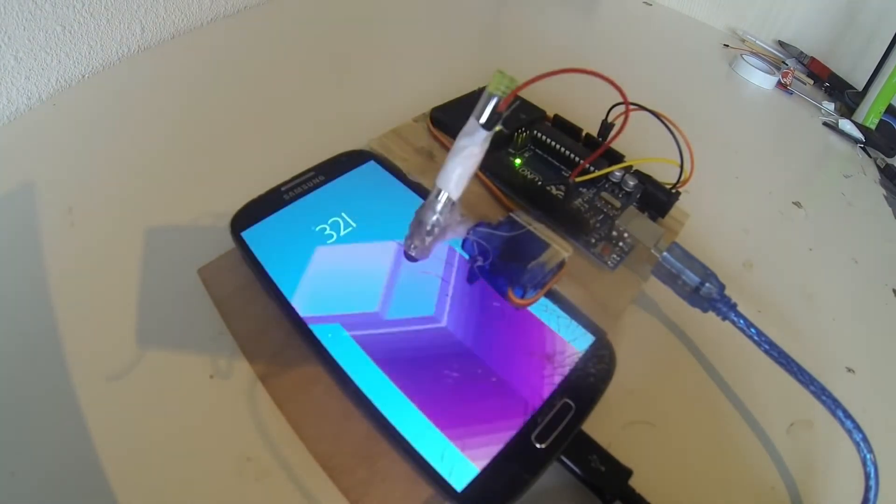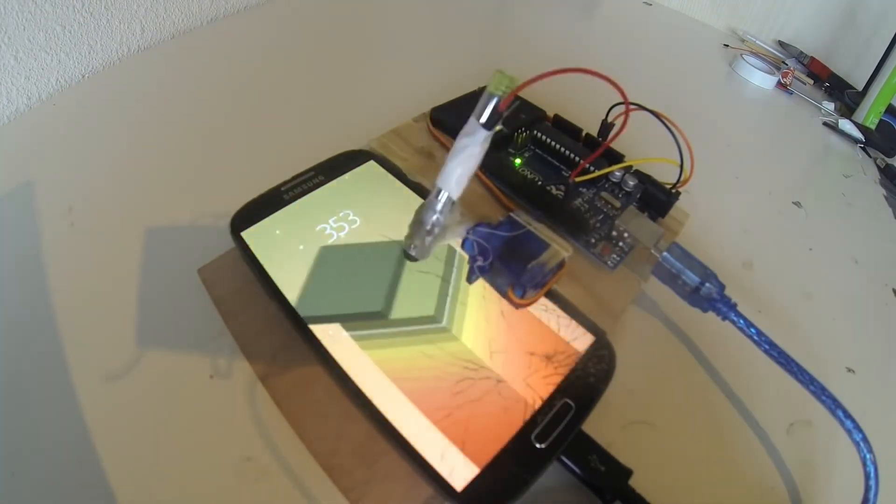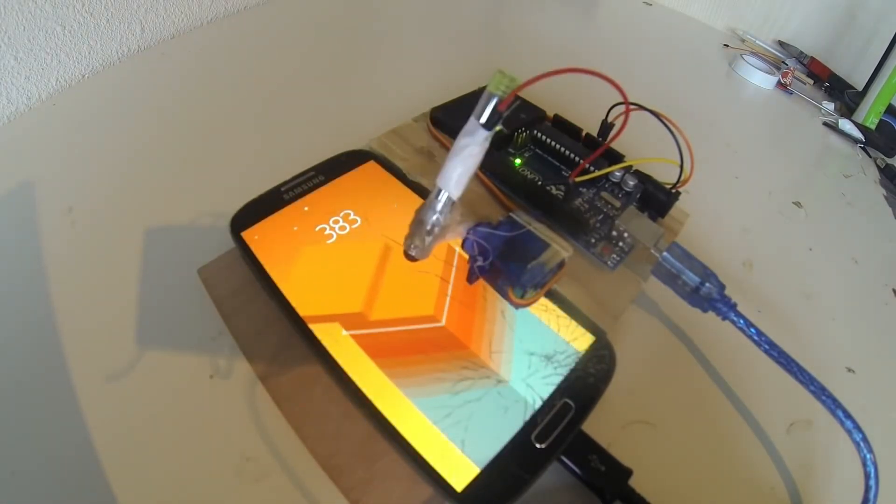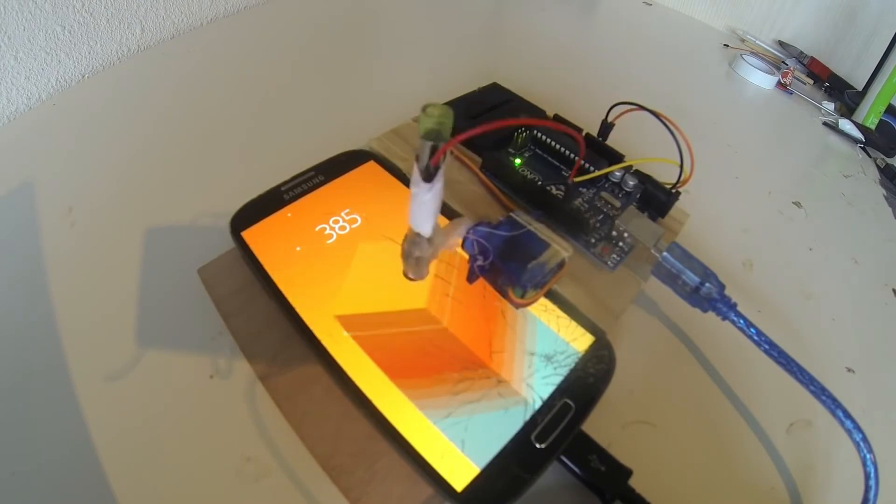The precision and accuracy of the robot's movements make it a great example of how even simple automation can be used to solve everyday problems and make tasks easier and more efficient.